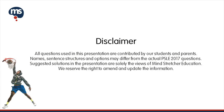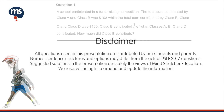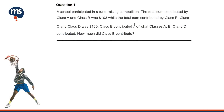Okay. Let's look at the first question. Question 1: A school participated in a fundraising competition. The total sum contributed by Class A and Class B was $108, while the total sum contributed by Class B, Class C, and Class D was $180. Class B contributed one-fifth of what Classes A, B, C, and D contributed. How much did Class B contribute?